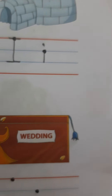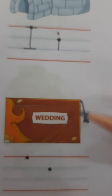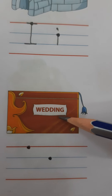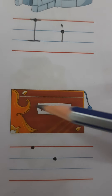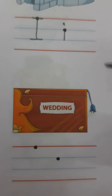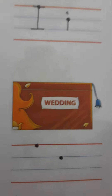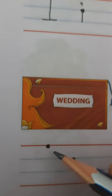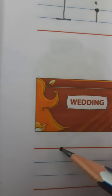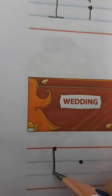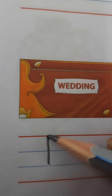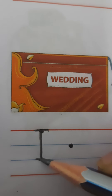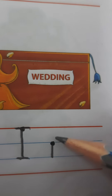Now let's see the next picture children. What is this? This is an invitation. Invitation card ma'am ne aapko kal bataya tha — usko Hindi mein bolte hain nimantran patr. So write I is for invitation — first we have to write capital I and then small i. I is for invitation.